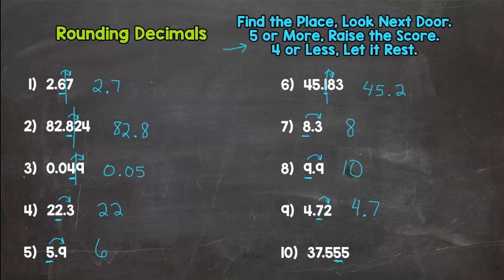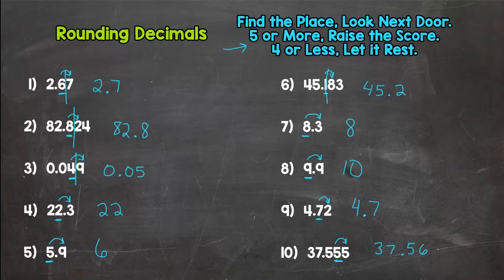For number ten, let's round to the hundredths place. Look next door — five says add one more, or raise the score. So we have thirty-seven and fifty-six hundredths. Remember, cut off at the rounded place.